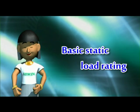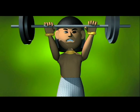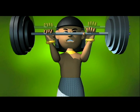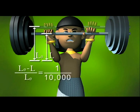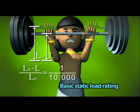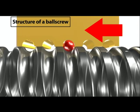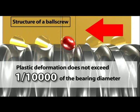Basic static load rating. Suppose an athlete at a weightlifting competition gradually increases the weight on his barbell. The more the weight increases, the more the weightlifter's arms flex. If the length of the person's uplifted arms is L0 and the length after lifting the barbell is L, when L0 minus L equals 1 ten-thousandth, we call the weight the basic static load rating. This is defined as the axial load at which the maximum plastic deformation of the bearings and the contact surface of the ball race does not exceed 1 ten-thousandth of the bearing diameter.